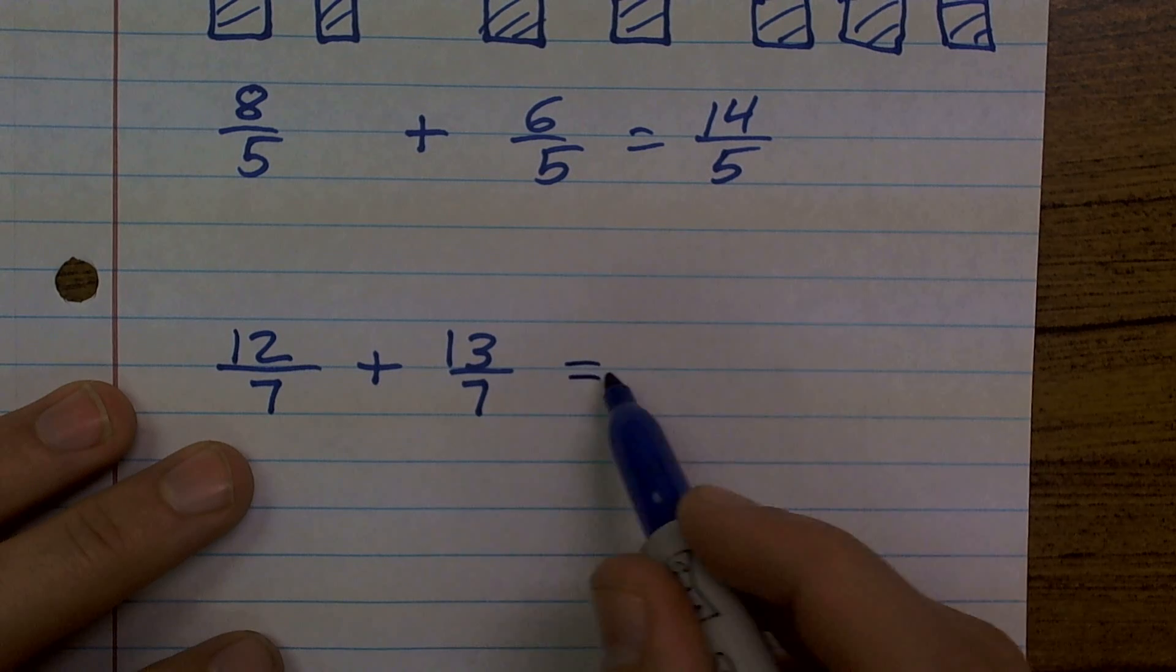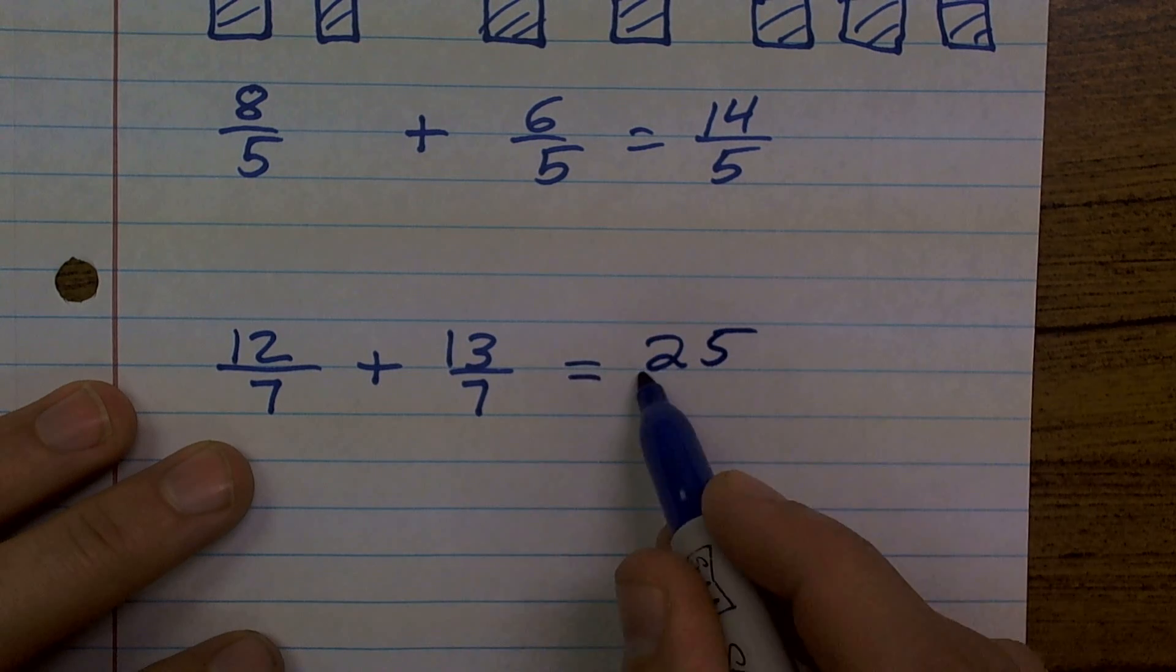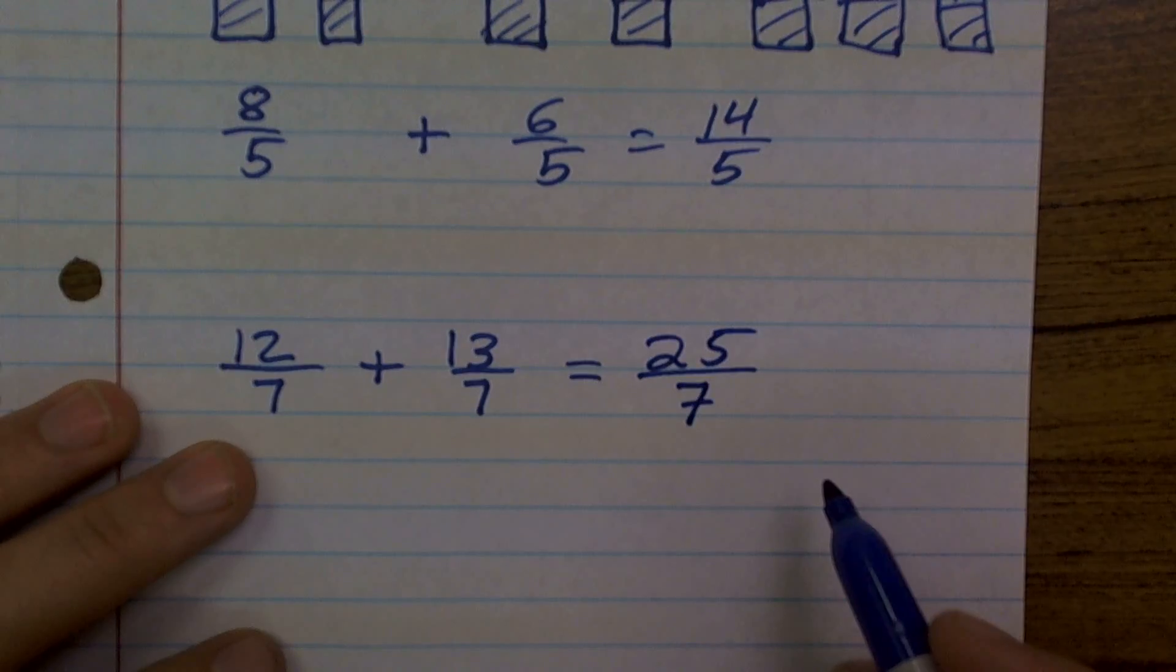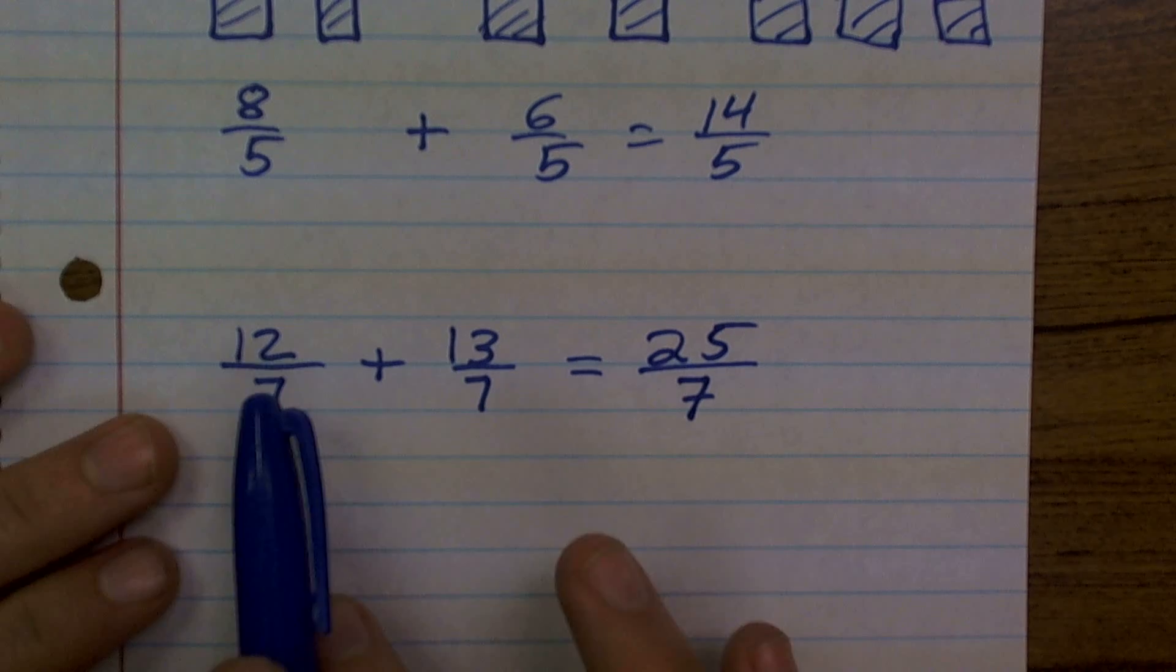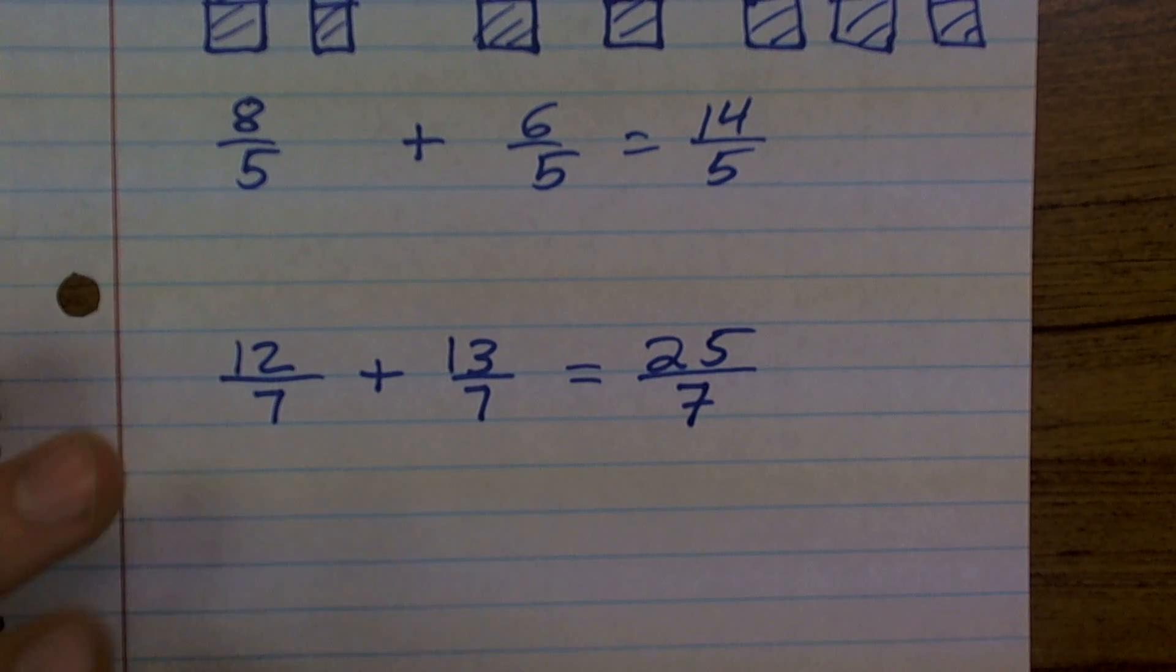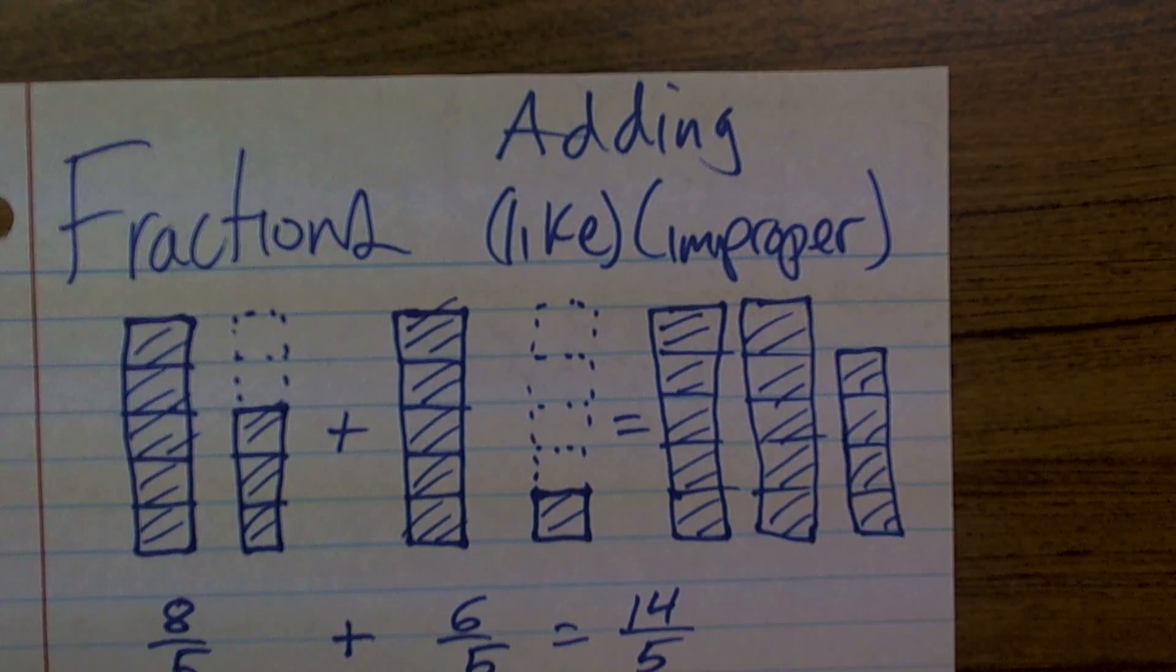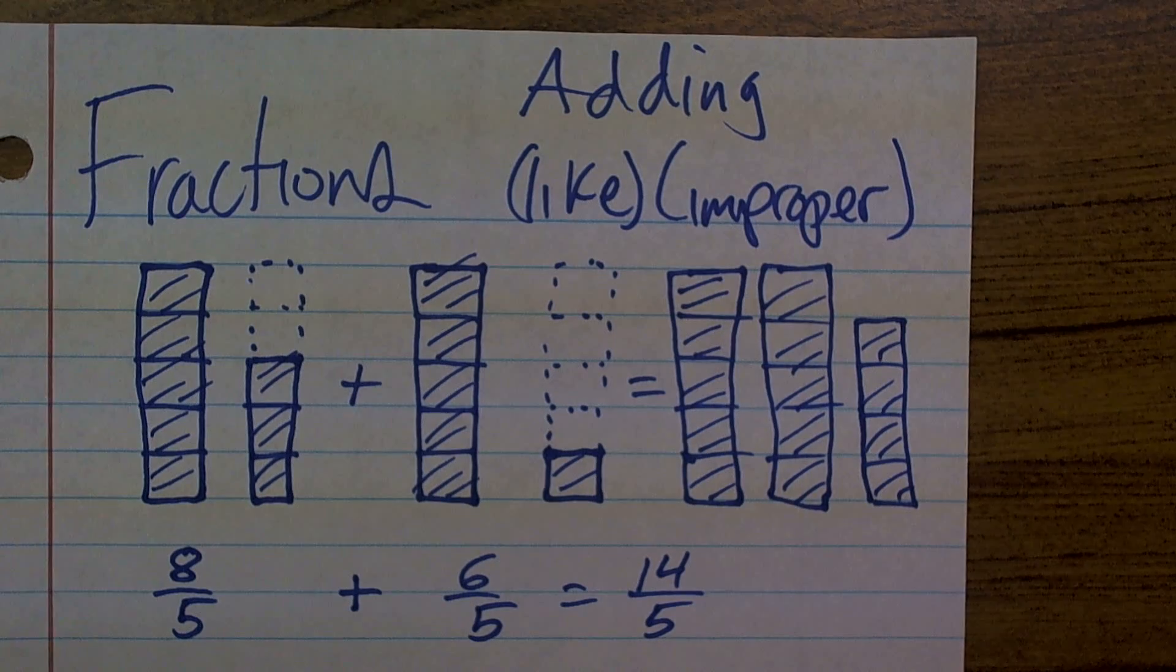So by adding them up, I'm going to get 25 pieces over 7. That's very important for us to understand, especially when we get into mixed numbers. Keep your denominator the same, just add the numerators. That is adding fractions improperly.